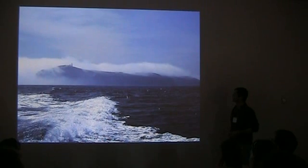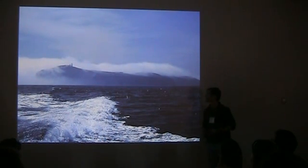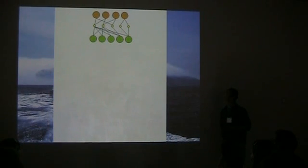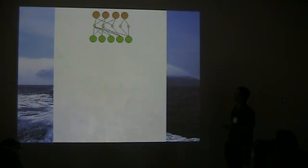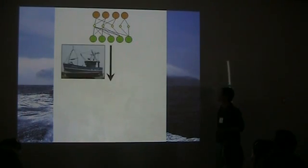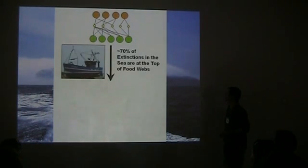I studied this web in the ocean. And in oceans, you see a lot of changes in food webs. So let's say you have a sample food web at the top with predators, prey, and plants or algae. Predators control the prey, prey control algae. But man has brought a lot of changes on this web, primarily through fishing.